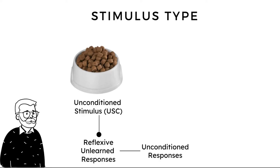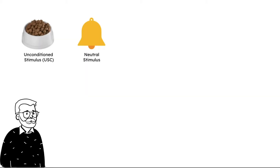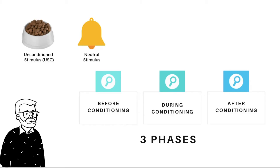The next type of stimulus important in classical conditioning is the neutral stimulus. As the name suggests, they are neutral in nature and therefore do not elicit any reflexive or unlearned responses. Pavlov used an unconditioned stimulus and a neutral stimulus across three different phases: the before conditioning phase, the during conditioning phase, and the after conditioning phase.